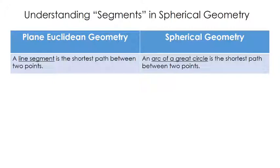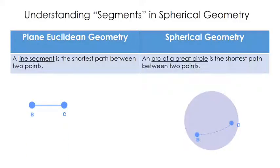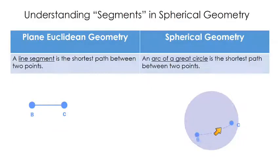Next: in Euclidean geometry, a line segment is the shortest path between two points. But in spherical geometry, an arc of a great circle is the shortest path between two points. So instead of a line segment to get from B to C, if we're traveling along the surface of a sphere, that's going to be an arc. An arc is the shortest distance between points in spherical geometry.